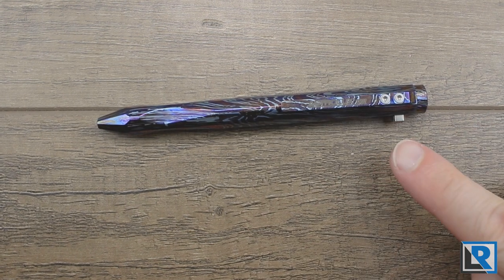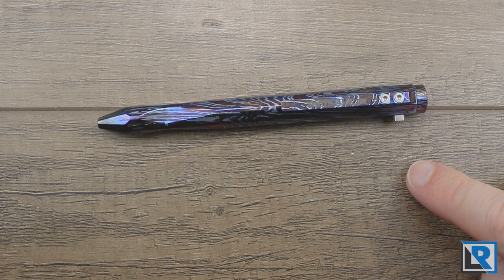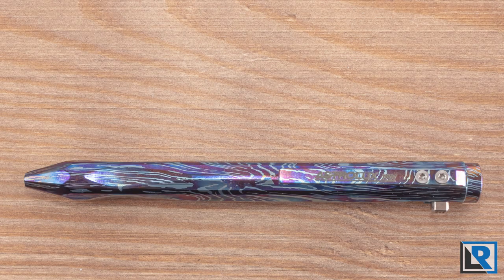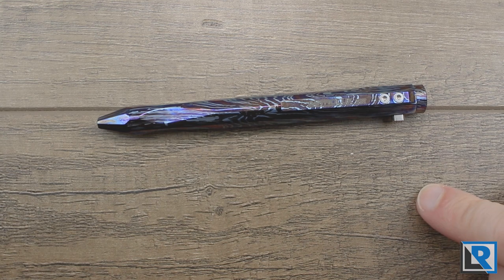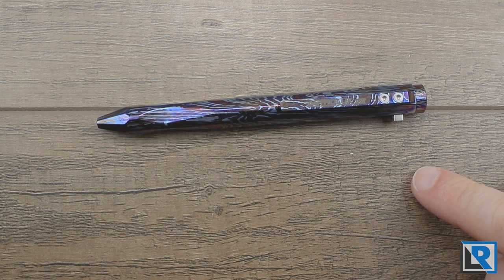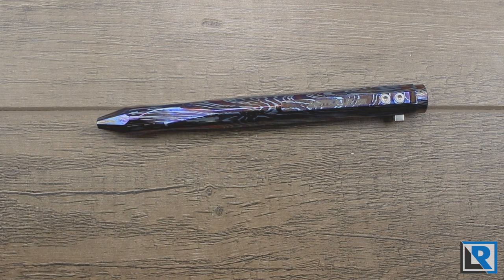The clip uses T6 Torx screws and luckily a small T6 Torx wrench is included in the package. The clip is not required to be removed for disassembly or for the cartridge to be changed.